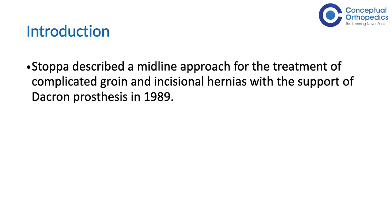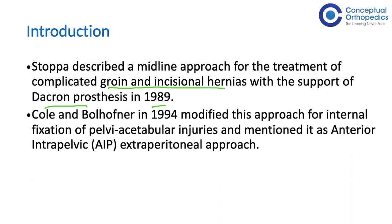To go back to how this particular approach came into being: Stopas, who was a general surgeon, described this approach for complicated groin and incisional hernias of the abdomen, using a Dacron prosthesis. He described this approach way back in 1989. Then Kole and Bolhofner in 1994 modified this and called it the anterior intra-pelvic approach - the AIP. It is an anterior intra-pelvic but extra-peritoneal approach. This Stopas approach could also be asked in the exam with this other name, the AIP approach.